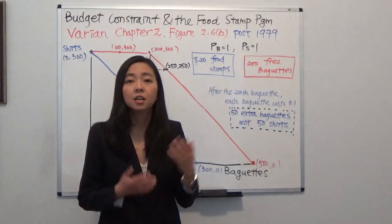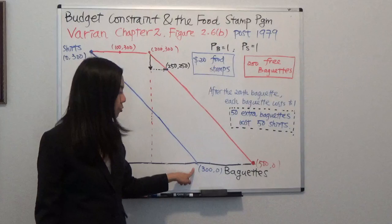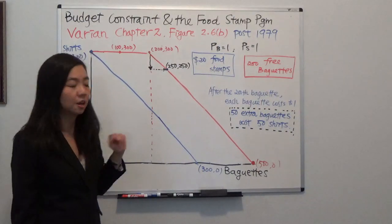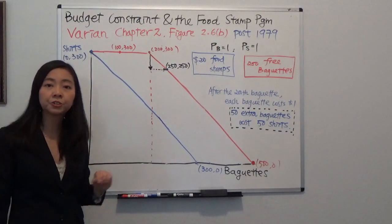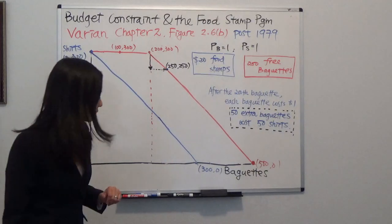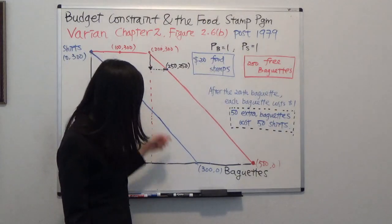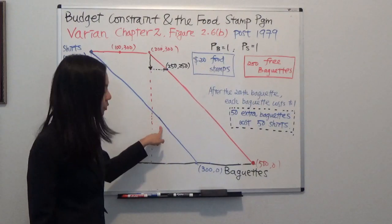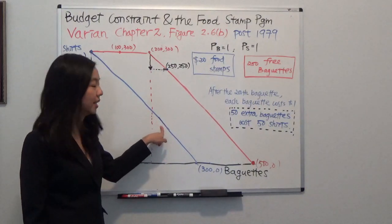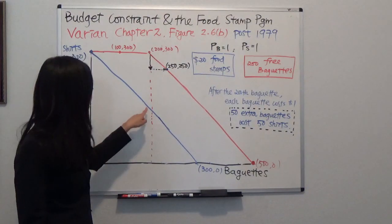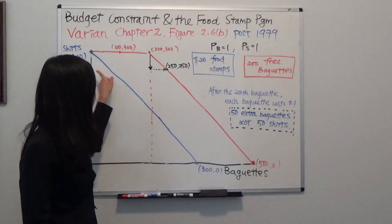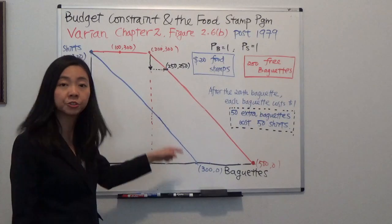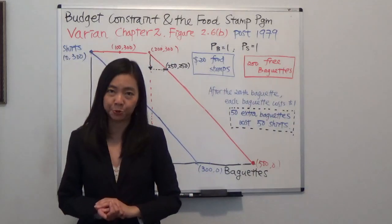With that $300, you can either buy 300 baguettes and no t-shirts, or 300 t-shirts and no baguettes, or any combination in between — such as 200 baguettes and 100 t-shirts, or 150 baguettes and 150 t-shirts. Just any combination in between without the food stamp program.